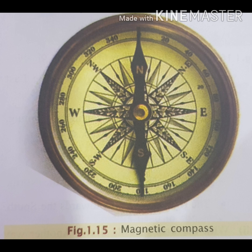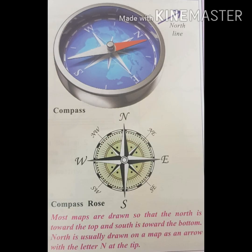How do we find direction? If we do not know the direction, we cannot do any kind of map work. For that, we use a magnetic compass. The most popular method of finding direction is to use a magnetic compass. The needle of the compass always points towards the north. When the compass is placed on a flat surface, the needle will swing and come to rest in the north-south direction.